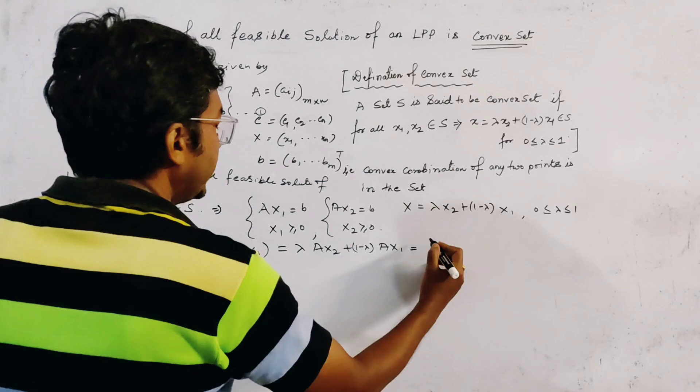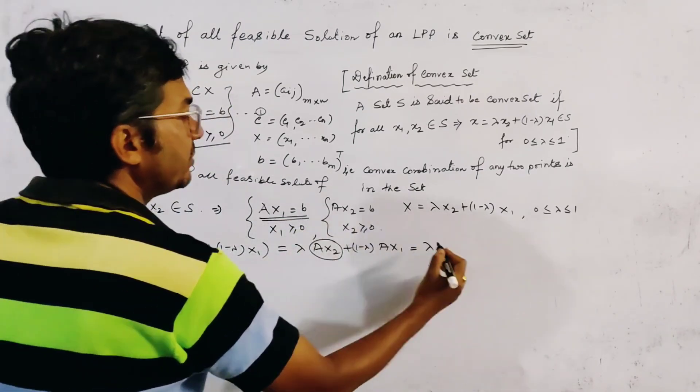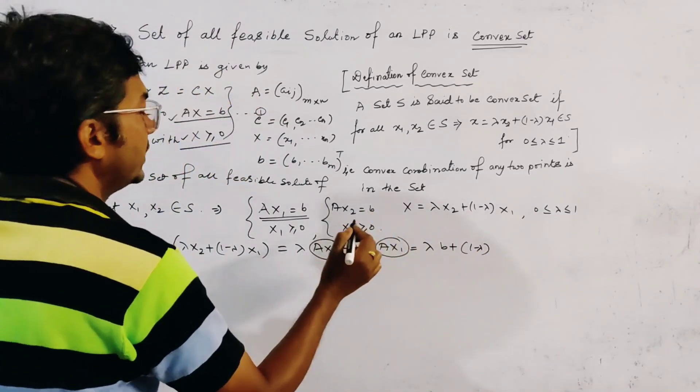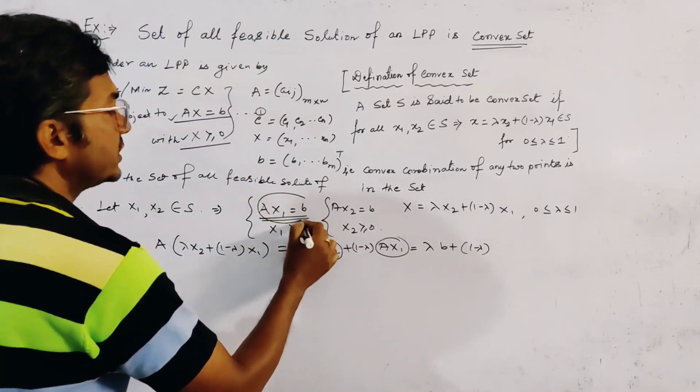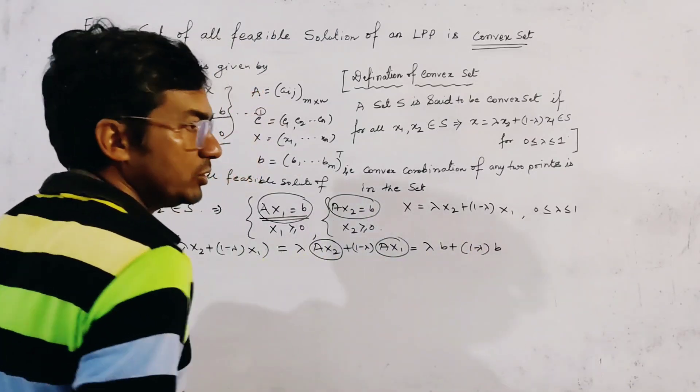And we write the value of A, X2, which is given by B, plus 1 minus lambda, equal to A, X1. This is given by A, X1 is this, and A, X2 is this. So, we put here B also.